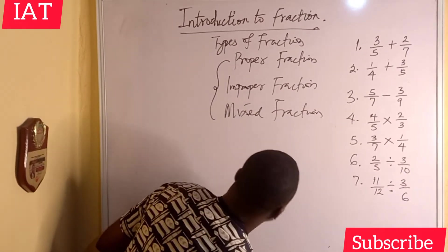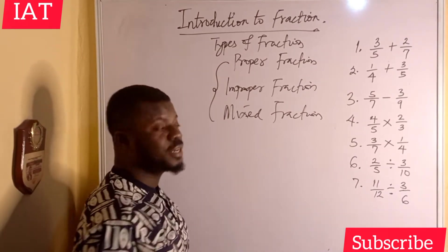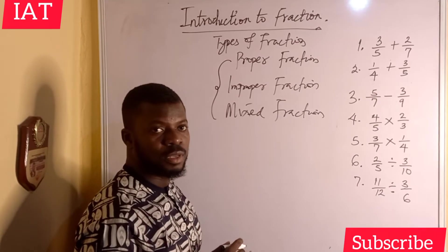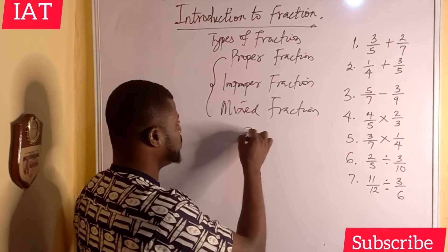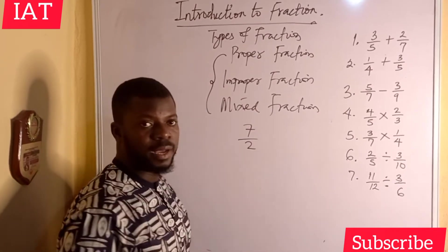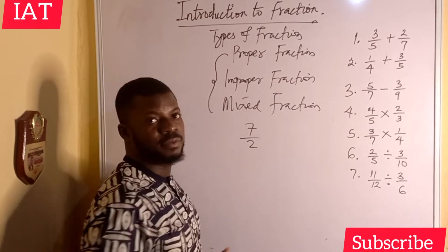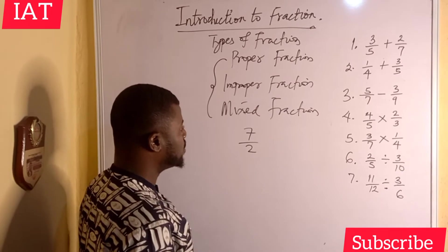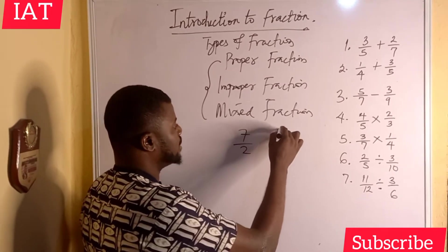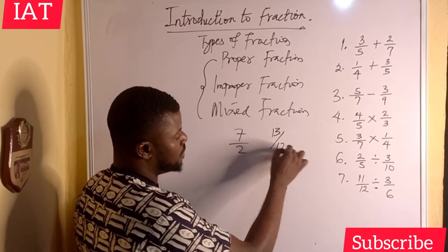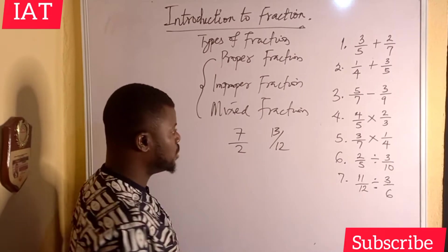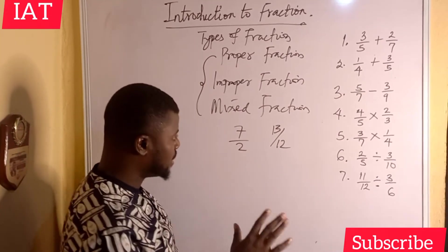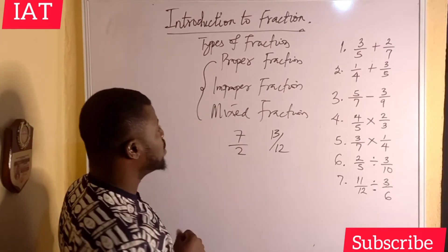Improper fraction is the reverse of proper fraction. It is when the numerator is greater than the denominator. For example, 7 over 2 is improper — 2 cannot carry 7. Similarly, 13 over 12 is improper because the numerator is greater than the denominator.